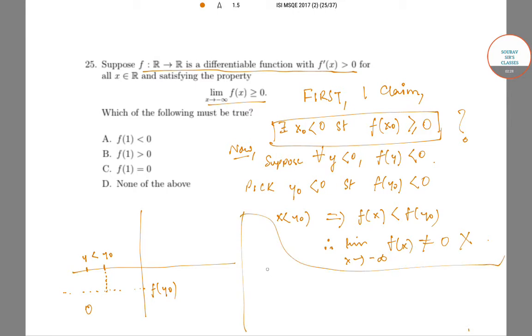Now that we have such an x₀, suppose this is our x₀ and this is 1, we can easily conclude that f(1) > 0 because f is strictly increasing.